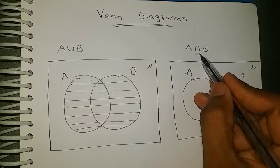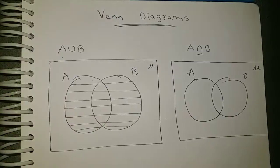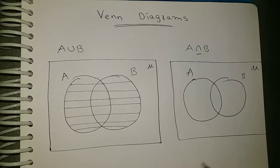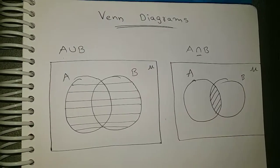Now here intersection is nothing but common. In these two circles, which part is common, shade that only. So this is the common part, so shade that part. This is A intersection B.